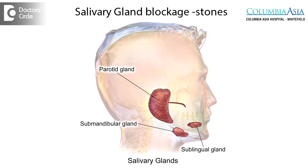There are three paired major salivary glands. One is the parotid glands in front of the ear, the submandibular glands below the jaw, and the sublingual glands below the tongue. All these glands produce saliva which pours into the oral cavity, mixes with the food, and enables the food to be masticated and digested.